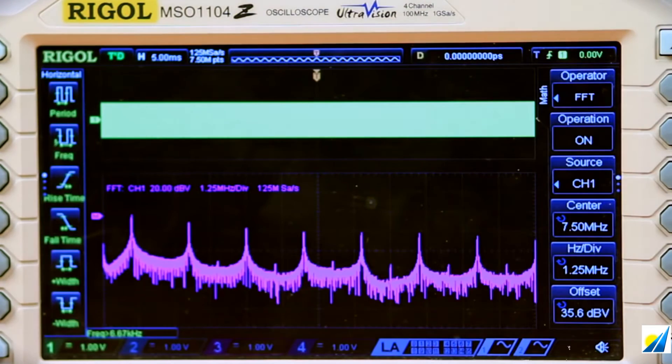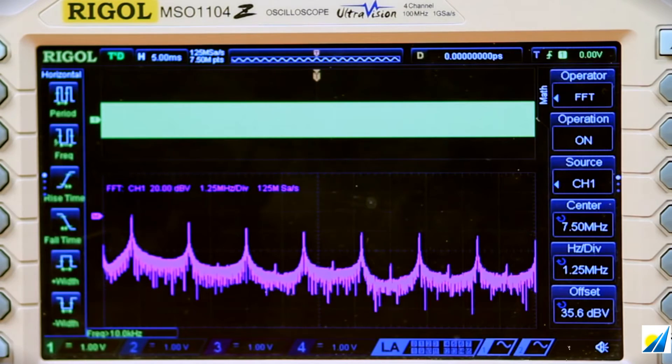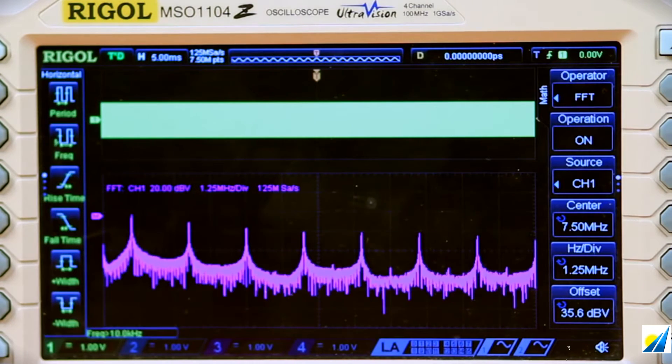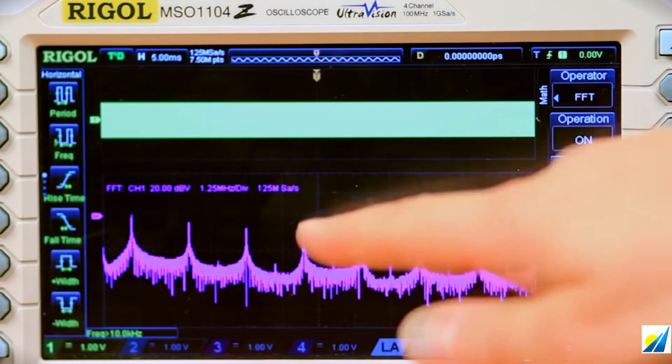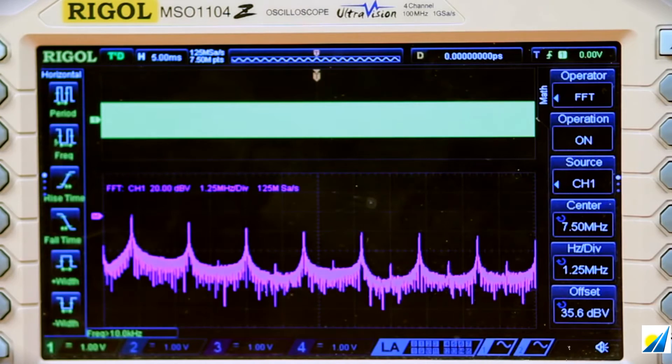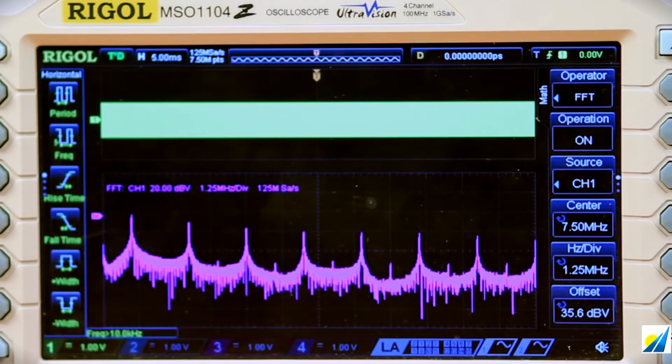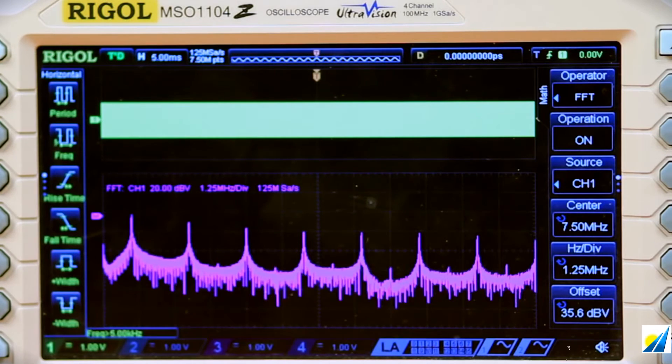Now let's move it over to a square wave. Now we can see all the odd harmonics. We have a first, third, fifth, seventh harmonic, and further out. So this gives us really a look at what frequency components are in the signal beyond the primary.